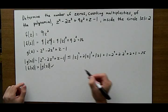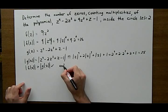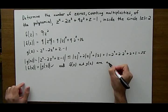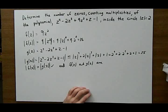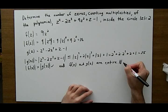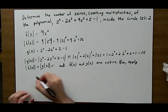So we'll put it here. And f of z and g of z are entire functions. We'll just write down entire. Now apply Rouché's theorem. Apply Rouché's theorem.